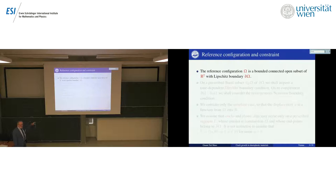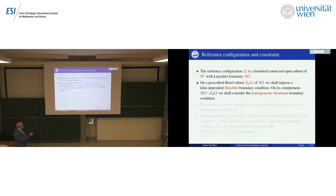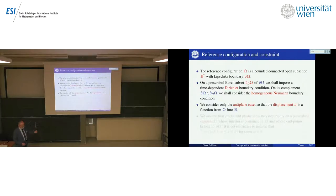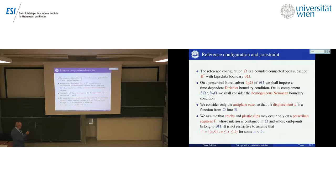Now I will explain the simplified model. The model is in dimension two; the reference configuration is a bounded connected open set with Lipschitz boundary. We fix some part of the boundary, marked D, where we prescribe the Dirichlet boundary conditions, which are time-dependent. In the rest, we impose homogeneous Neumann boundary conditions, meaning that part is traction-free. To simplify, we consider the anti-plane shear case, so we work with scalars. This is very useful because we can use the maximum principle.